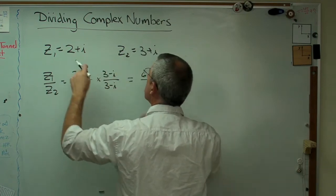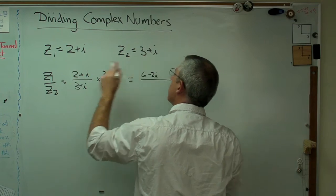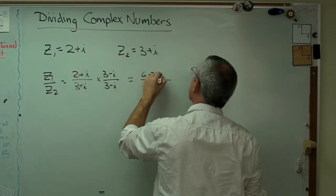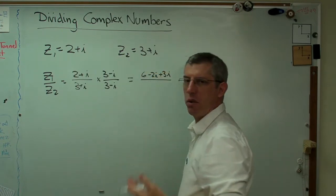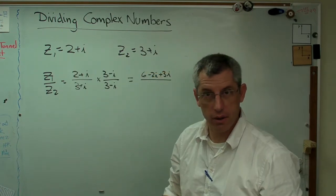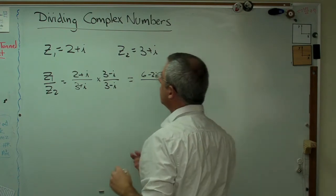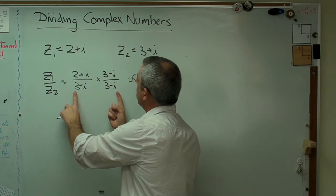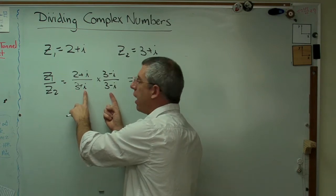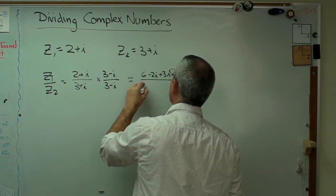So first, 3 times 2 is 6, minus 2i, plus 3i, minus i squared. Well, i squared is minus 1, minus minus 1 is plus 1. Let's do the same thing down here. 9, minus 3i, plus 3i, plus 1. So that's going to be 10 in the denominator.